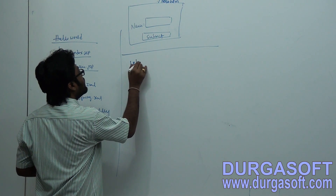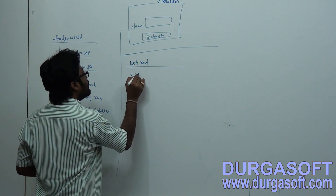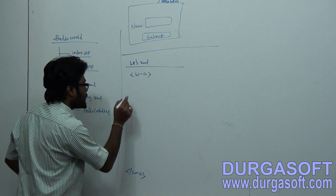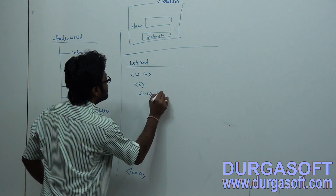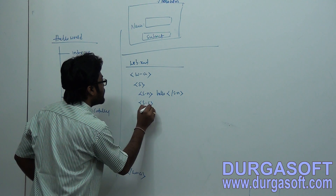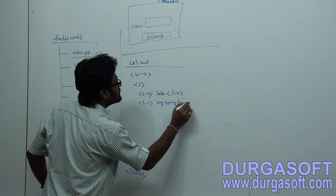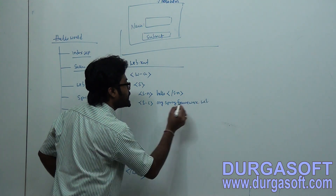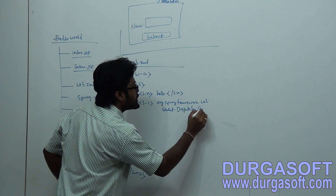Create one web.xml file. In that web.xml file, in between the web-app tags, you should configure a servlet. The servlet name can be any name, but the same name you have to use for your spring.xml file. The servlet class is org.springframework.web.servlet.DispatcherServlet.